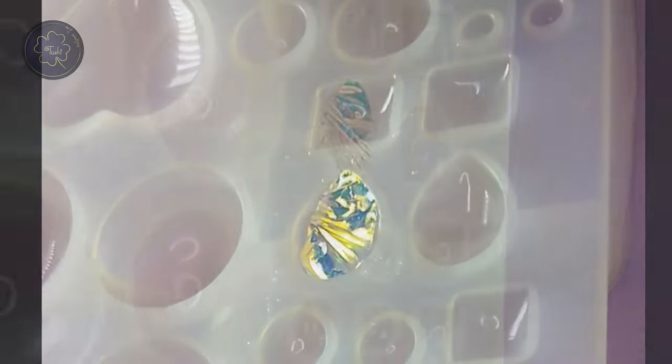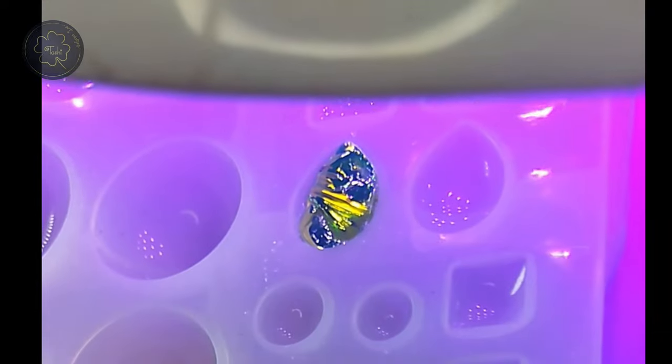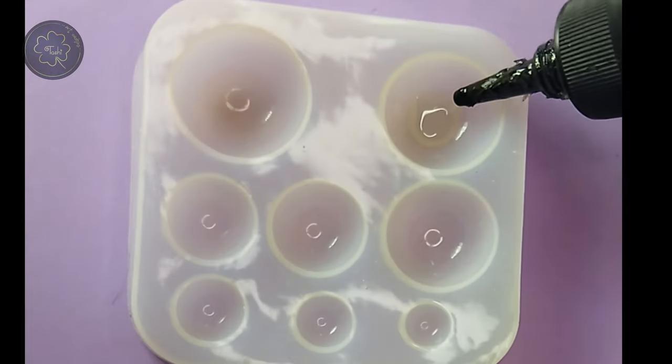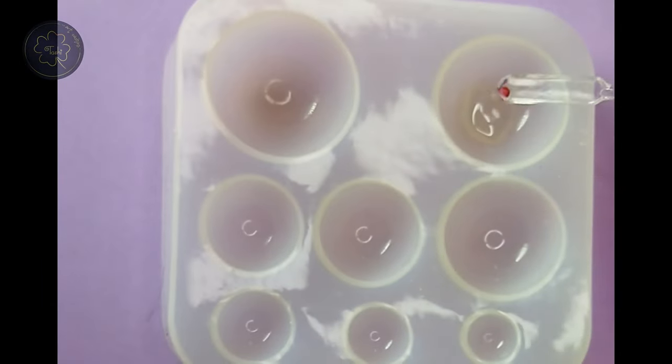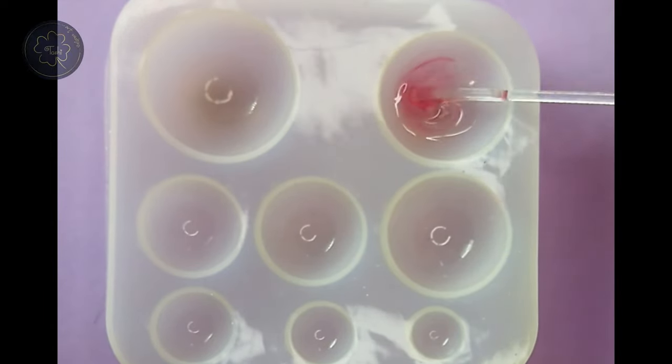As shown, now place it under the UV light for 120 seconds. While the pendant is curing, let's create some color. Take another silicone mold and pour UV resin into it. Add red and white alcohol ink to the resin to create a beautiful pink shade, or you can choose any other color combination you like.